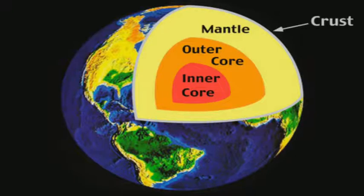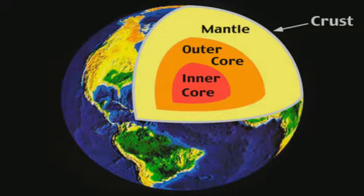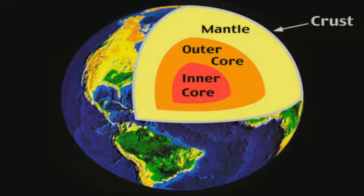Beneath the crust is a very thick layer of rocks called the mantle. The mantle extends up to 2,900 km in depth. The entire mantle is not homogeneous; it is subdivided into two parts: the upper mantle, which is up to 100 km in depth, and the lower mantle, which is made up of silica and magnesium.